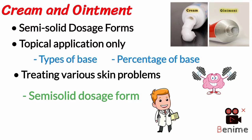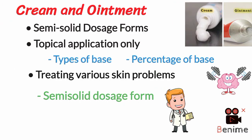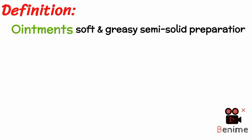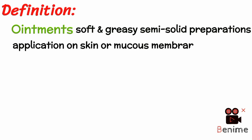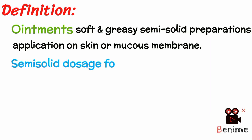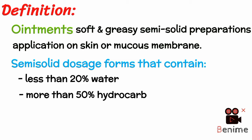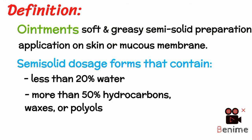Let's have a look at the difference between cream and ointment. Ointments are soft and greasy semi-solid preparations intended for application on the skin or mucous membrane. Ointments are semi-solid dosage forms that contain less than 20% water and more than 50% hydrocarbons, waxes, or polyols as the vehicle.